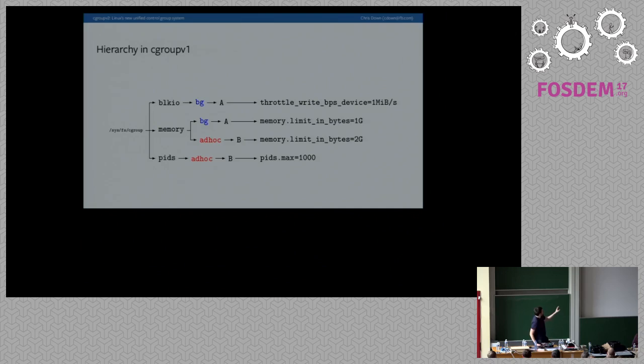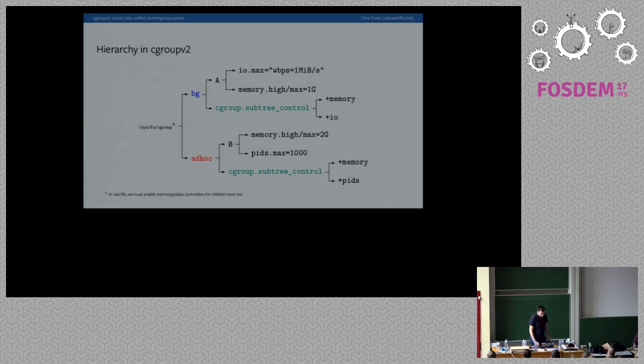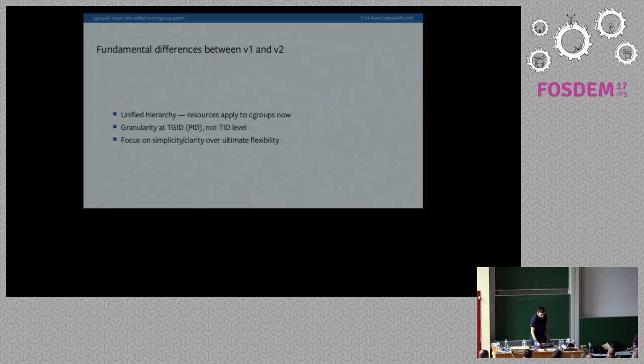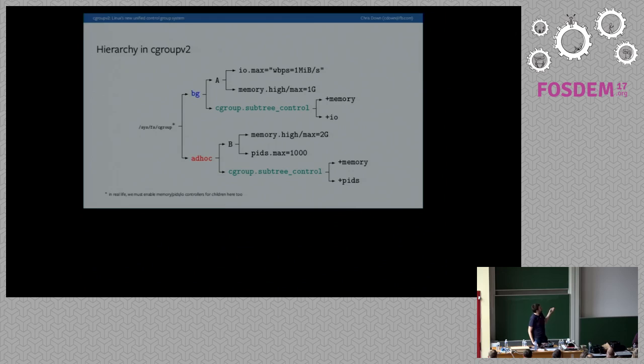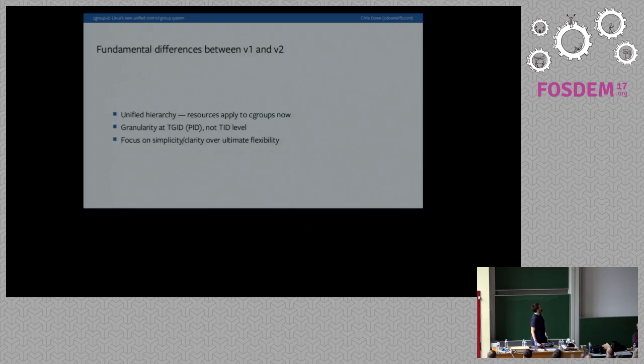Here's the version one hierarchy for comparison — resources first, and cgroups with the same name having no relation to each other. In cgroup v2, we have this unified hierarchy. You enable resources for a cgroup's children by writing +memory, +pids, +cpu, +io, to cgroup.subtree_control. When you do this, the files appear in that directory instantaneously. You also need to enable the memory, pids, and IO controllers at the top level for this to work, but I'm omitting that here for simplicity.